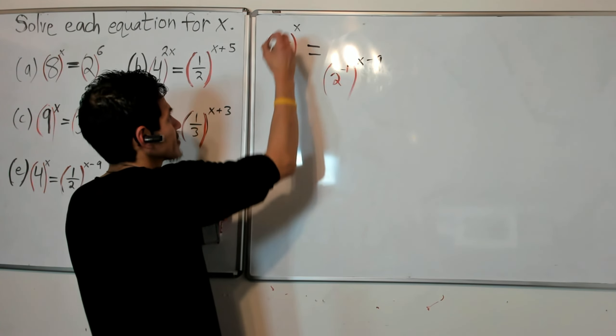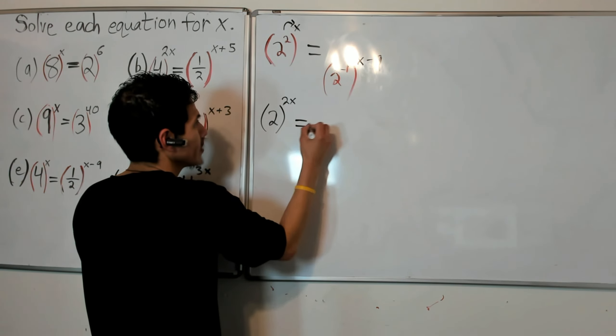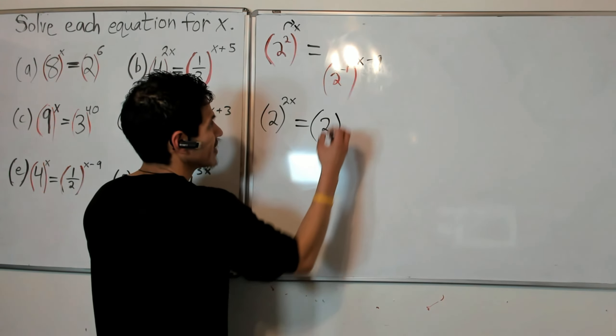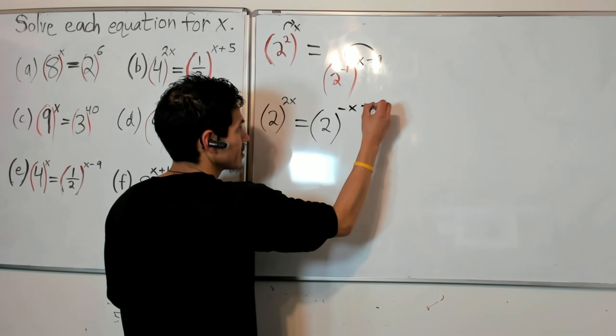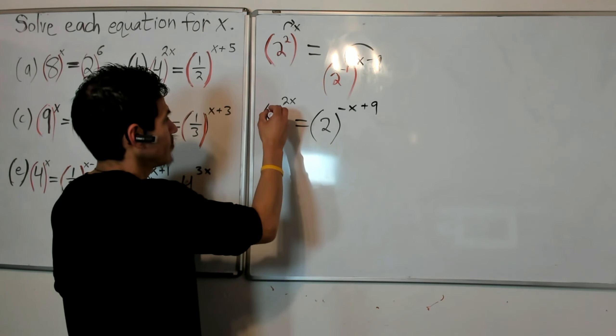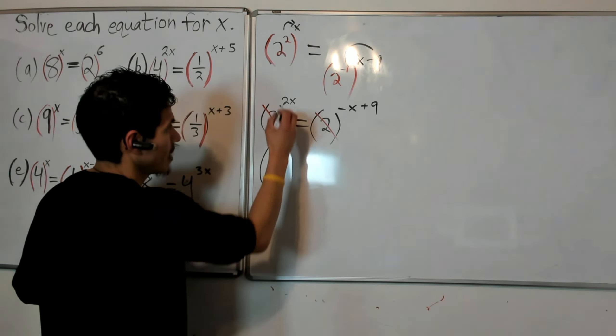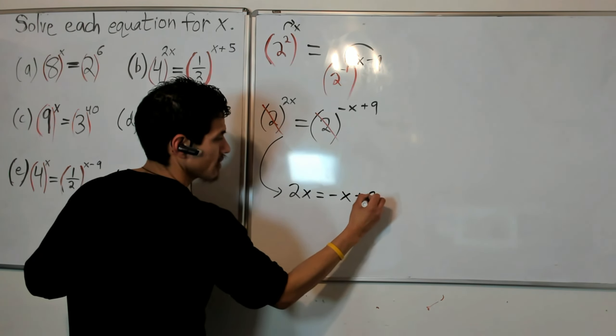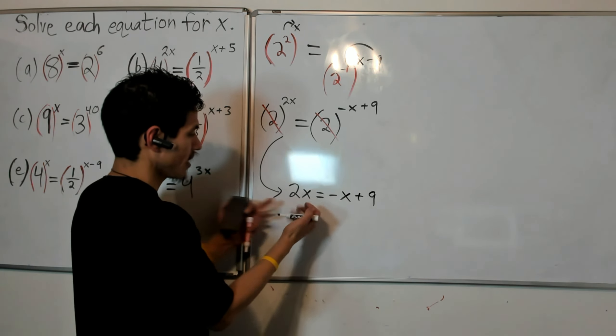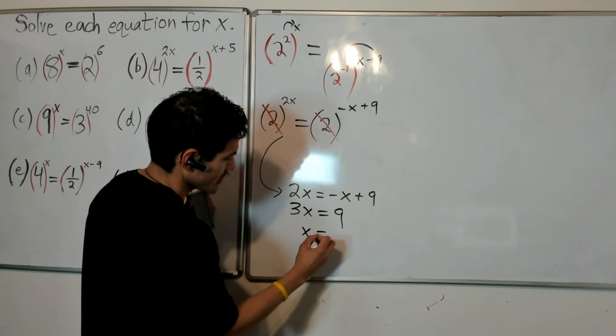So 2 to the 2 to the x, I'm going to have 2 to the 2x. And 2 to the negative 1 to the x minus 9, so 2 to the negative x plus 9. Bases are cancelled because they're both 2. Going down here, I just have 2x equals negative x plus 9. Solve for x, add x to both sides. I have 3x equals 9. Divide by 3, and I get x equals 3.